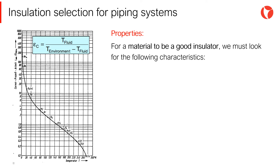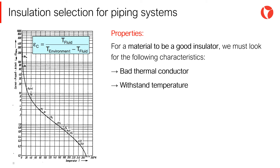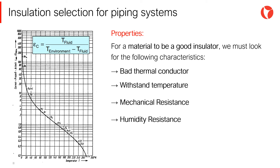For a material to be a good insulator, we must look for the following characteristics: to be a poor thermal conductor; to withstand the operating temperature of the system; it should have mechanical resistance, humidity resistance, and personal protection capability; and it must be economical.